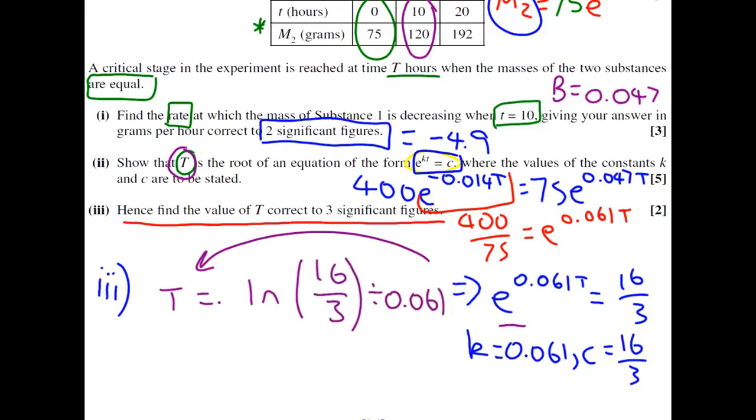If you put that on your calculator, you're going to get the answer that t equals 27.4 hours to 3 significant figures.